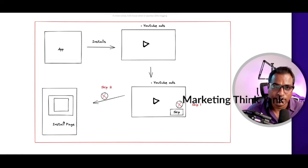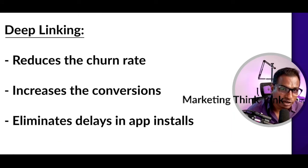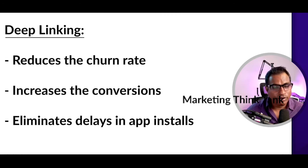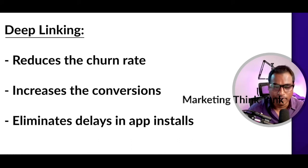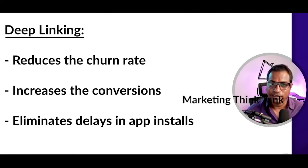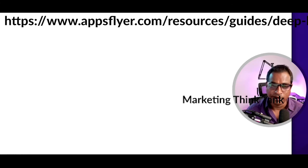Deep linking is an incredible process for getting as many conversions as possible — you reduce the churn rate, you reduce drop-offs where people delay installing your app. All you need is a deep link generator to generate deep links for your mobile apps. Why do we need deep linking? We need it for three specific reasons. First, it provides a better user experience overall.